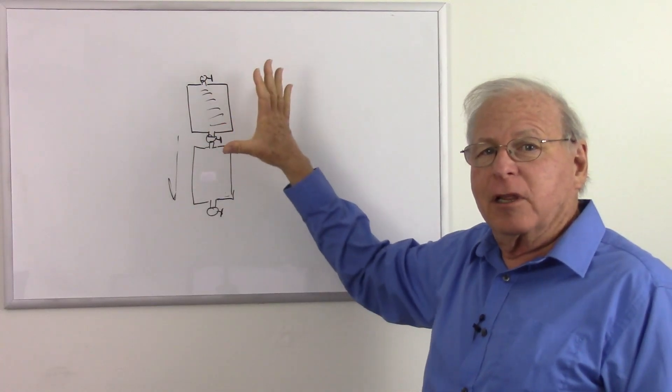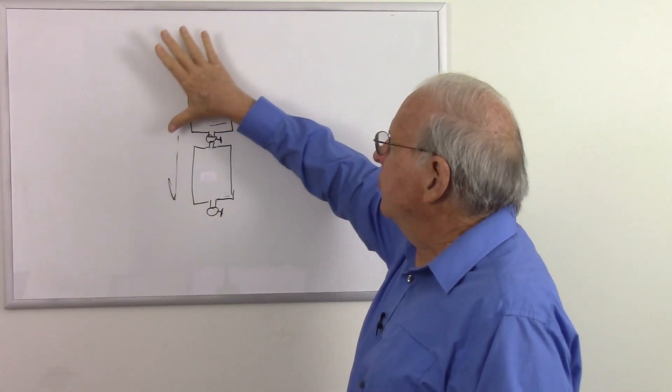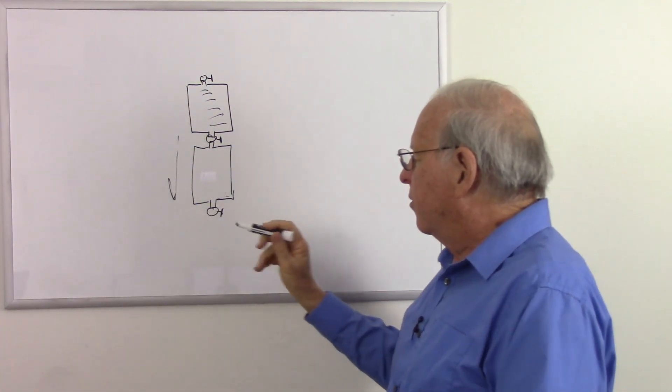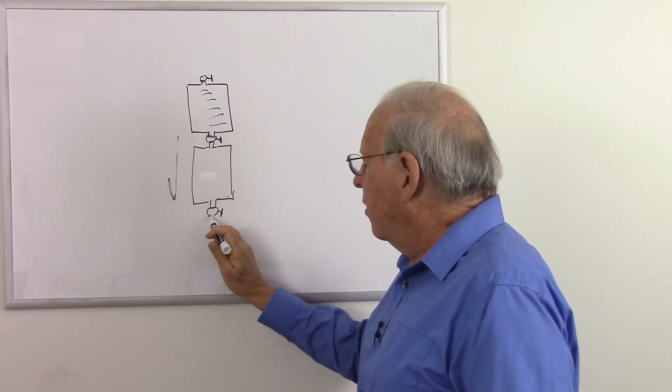Now, electricity is going to be a little different. We can't trade the electricity for air like I can trade the water for air, so we'd have to make a complete circuit. So let's go ahead and draw a complete circuit.